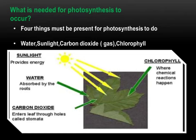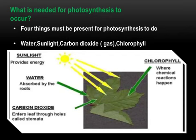Sunlight provides energy. Water is absorbed by the roots. Carbon dioxide enters leaves through holes called stomata. Carbon dioxide is absorbed by the plants. If it is not absorbed by the plant, it pollutes our environment and is not healthy for humans.